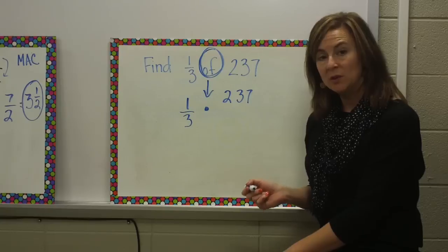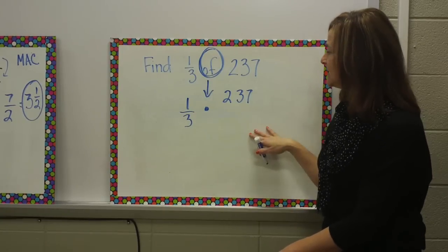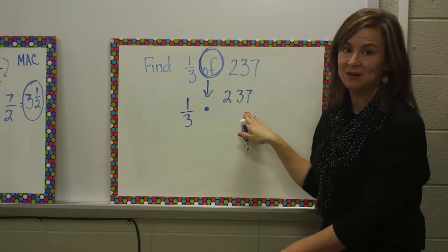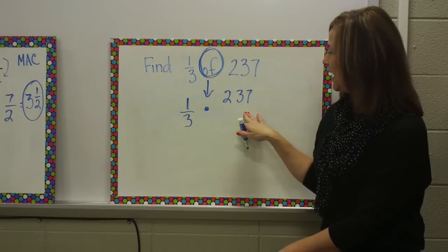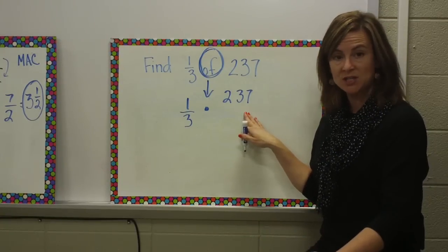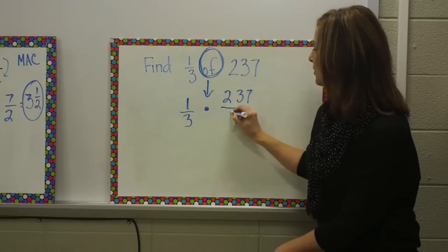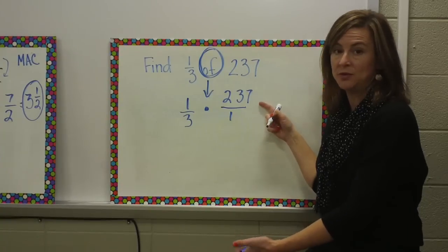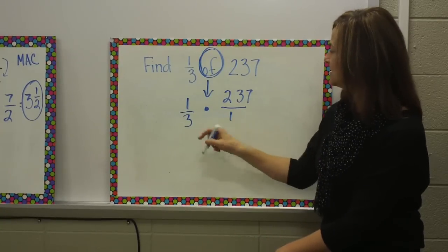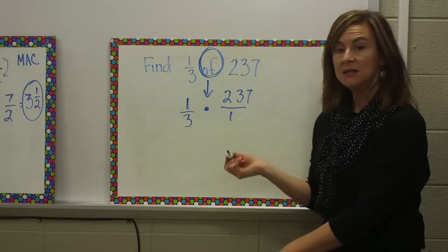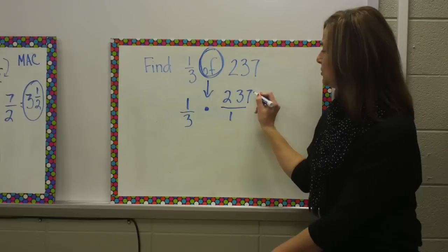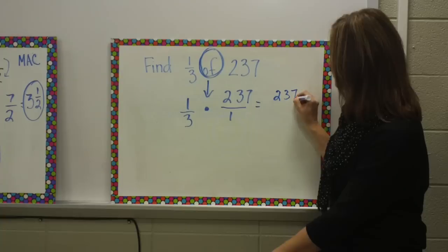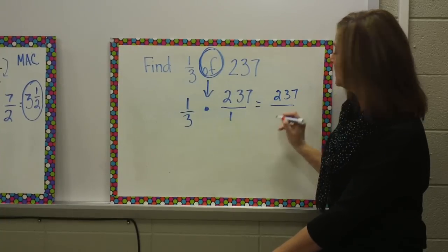When we're multiplying or dividing rational numbers, everything needs to be in fraction form. I have a fraction here, but I have a whole number here. We've talked about how to turn a whole number into a fraction. We simply put it over one, because this equals the same thing. 237 divided by one is 237. Now I have this in fraction form. You could check to cross simplify, or you could multiply across. One times 237 is 237. Three times one is three.